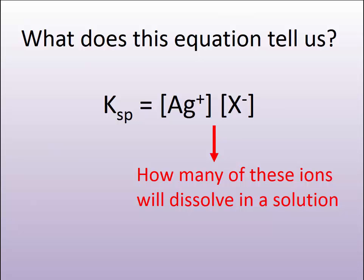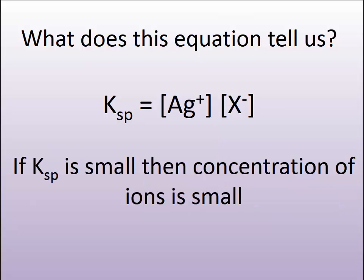What this means is if the Ksp is really, really small, then the concentrations of ions are going to be really, really small. Remember that's the equation. The equality sign in an equation is your balancing point. It's where you make your decisions, right?